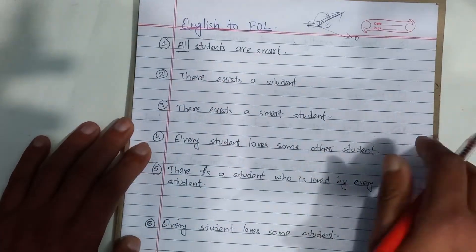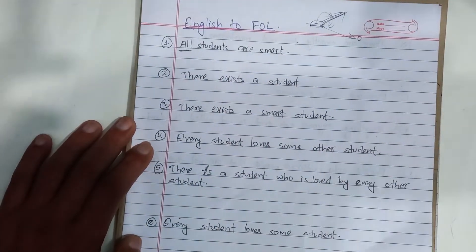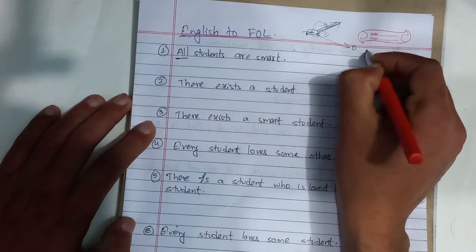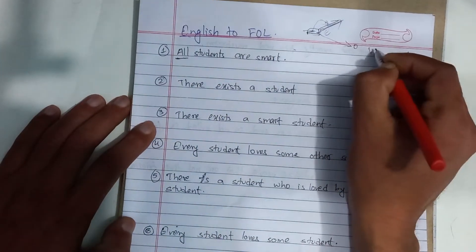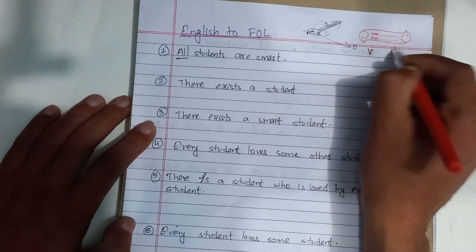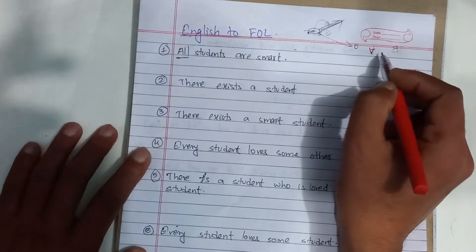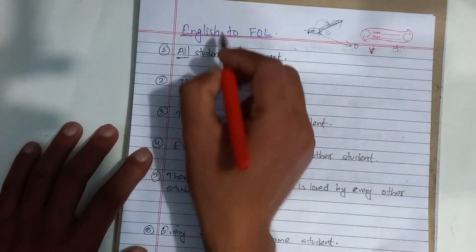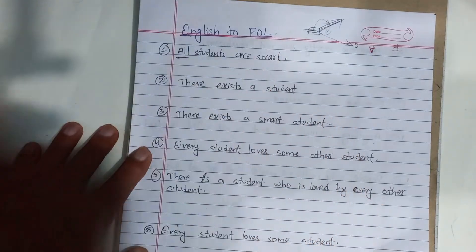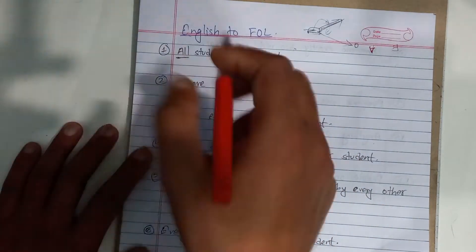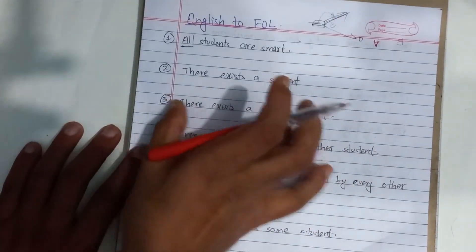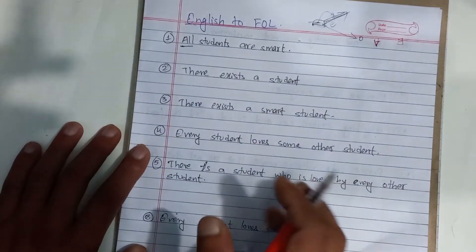We are going to start with the data. First of all, we are going to study the quantifier: for all, for all, there exists. When we use English to convert, the idea is that there are no tricks that we can't do to understand the English sentence meaning.